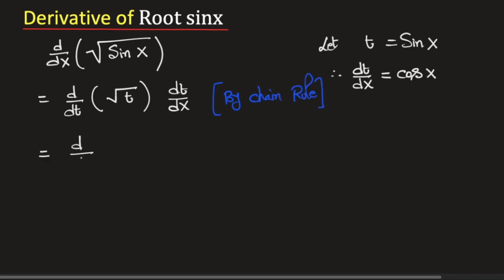We know that square root of t can be written as t to the power 1 by 2 and dt dx. To find this derivative we will use the power rule of derivatives. It says that the derivative of x to the power n is equal to n times x to the power n minus 1.